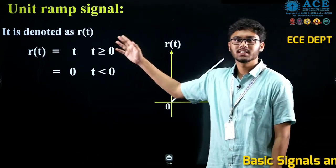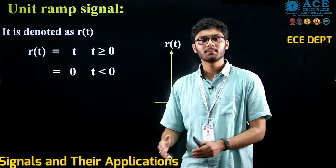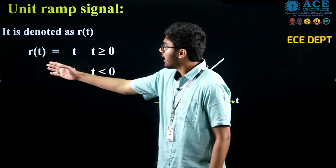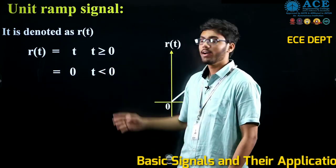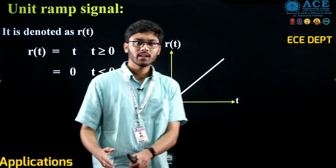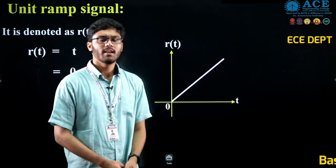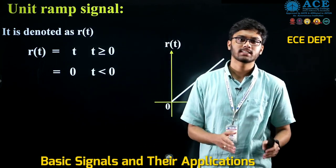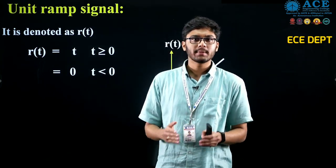Next, the unit ramp signal. A unit ramp signal is represented by r(t) and defined as: r(t) equals t for t greater than 0, and 0 for t less than 0. Graphically, it is a straight line passing through the origin. We call it a unit ramp signal because it has a slope equal to 1.